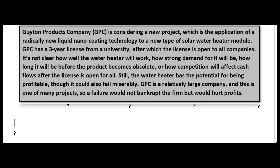Here's an example of a capital budgeting problem. GPC is considering a new project: the application of a new liquid nano coating technology to a new type of solar water heater. They've got a three-year license from a local university, after which the license is open to all companies. There's risk around how well the water heater will work, how strong demand will be, how long before it becomes obsolete, and how competition will affect cash flows after the license expires.